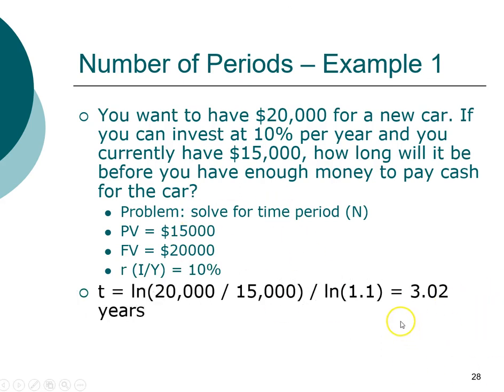We have most of the information we need, so we'll enter it using the information from the timeline or from your notes. One thing we'll remember is that we need to enter one of these as an outflow. Once again, I'll put the present value as an outflow, so that will be negative $15,000.